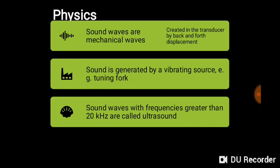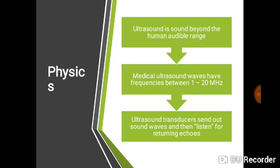Sound waves are mechanical waves — we already know that from basic physics. They are created in the transducer by back-and-forth displacement. Remember compression and rarefaction — that's the way sound waves are produced. You have periods of compression and then periods of rarefaction. Sound is generated by a vibrating source, for instance the tuning fork experiment. Sound waves with frequencies greater than 20 kilohertz are what we call ultrasound — at that level, it's not audible to the human ear.